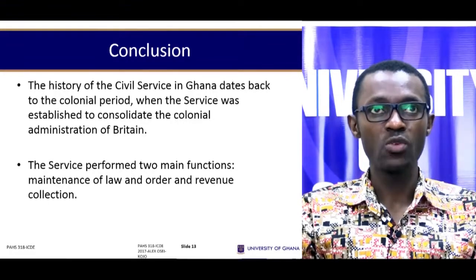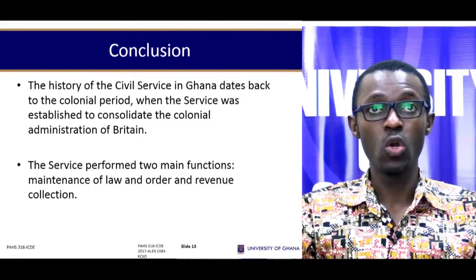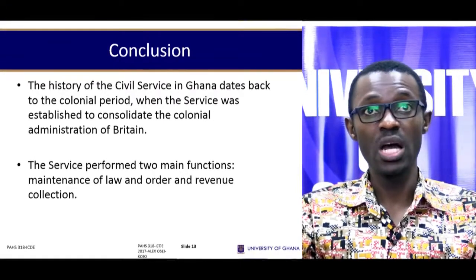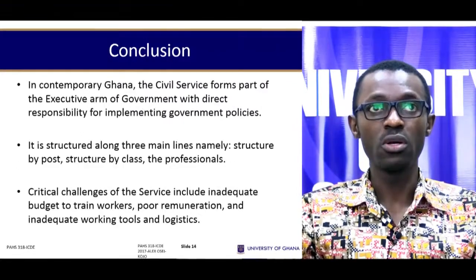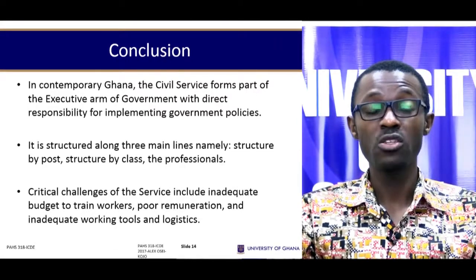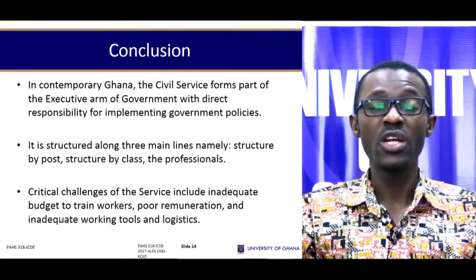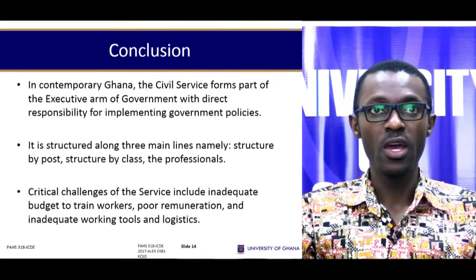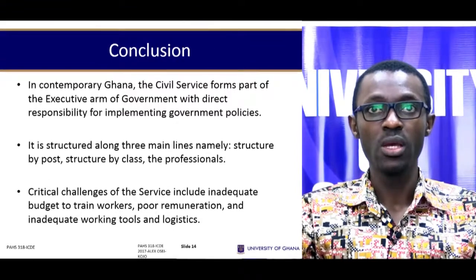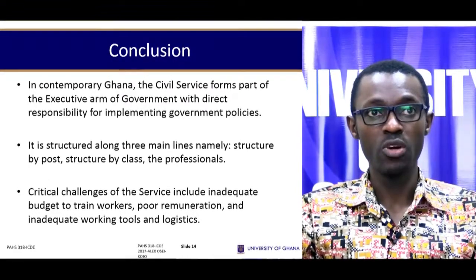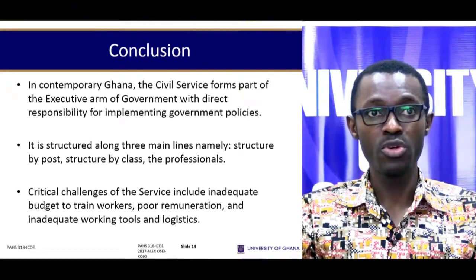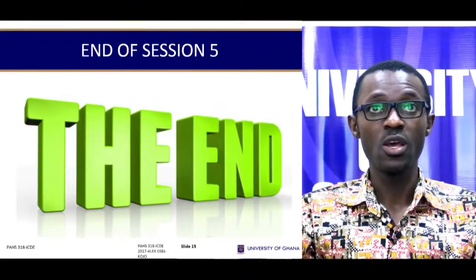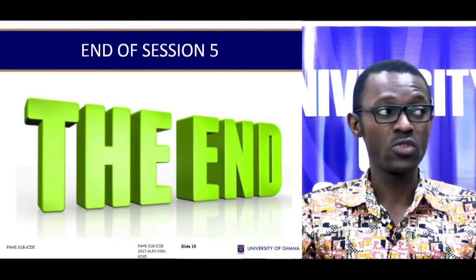To conclude this session, the history of the civil service in Ghana dates back to the colonial period when the service was established to consolidate the colonial administration of Britain. The service performed two main functions: maintenance of law and order, and revenue collection. In contemporary Ghana, the civil service forms part of the executive arm of government with direct responsibility for implementing government policies. It is structured along three main lines: structure by post, structure by class, and the professionals. Critical challenges include poor remuneration and inadequate working tools and logistics. With this, we come to the end of session five. Get ready as we move to session six. Thank you very much.